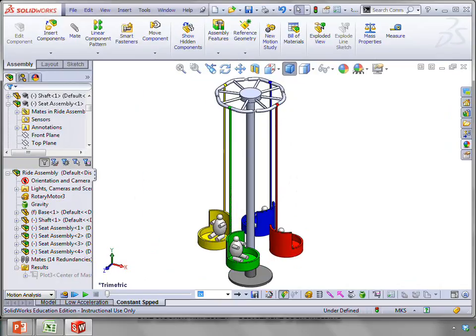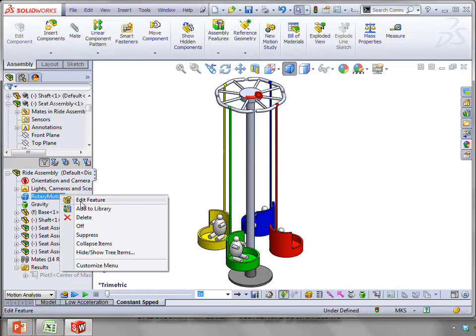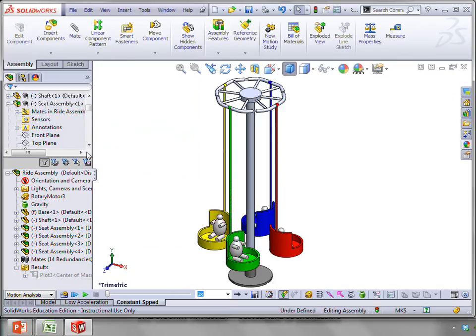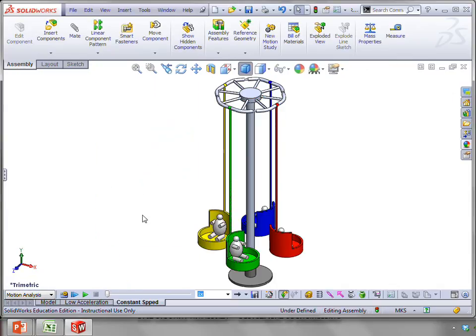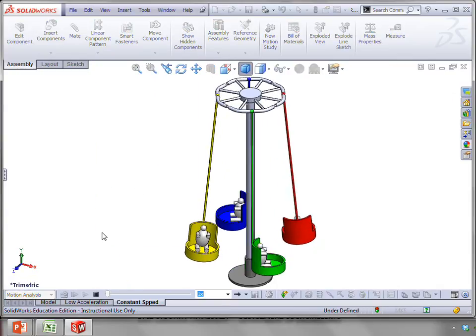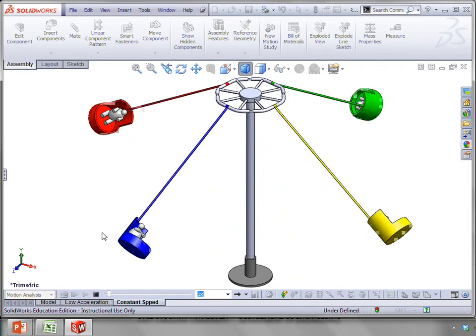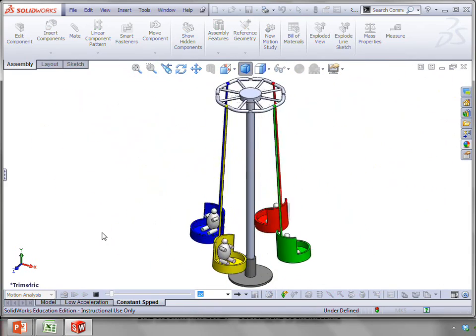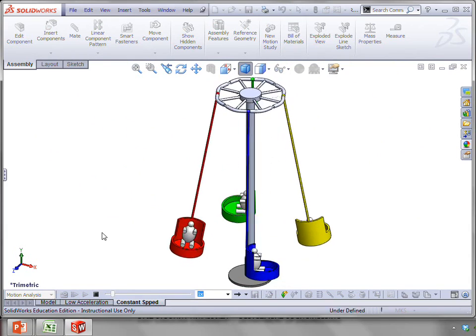OK, so here is the SOLIDWORKS motion simulation. And to start out with, we've put on a rotary motor here. As you can see, we've got the speed as a constant speed of 11.18 rpms. And while the duration of this is two minutes, we'll just run a little bit to show what happens. Certainly, you can see that the angle goes much larger than the predicted 45 degrees.